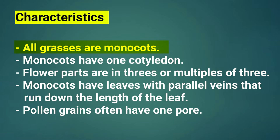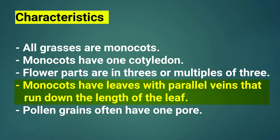Monocots have one cotyledon. Flower parts are in threes or multiples of three. Monocots have leaves with parallel veins that run down the length of the leaf. Pollen grains often have one pore. Those are the characteristics of monocots.